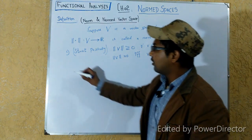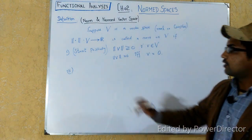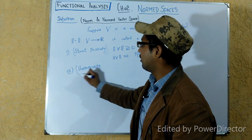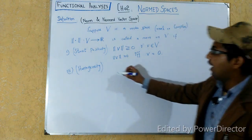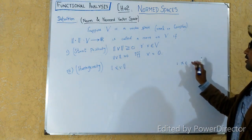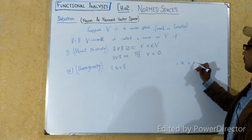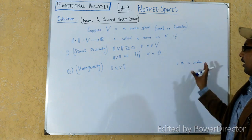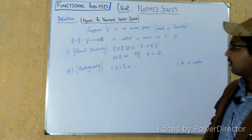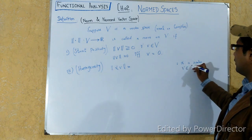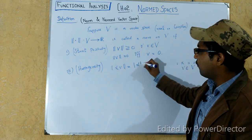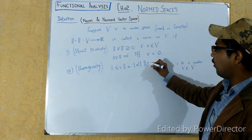The second property is called homogeneity. This property says that the norm of alpha times V, where alpha is a scalar belonging to the field of the vector space V and V is a vector in V, is equal to the absolute value of alpha times the norm of vector V.